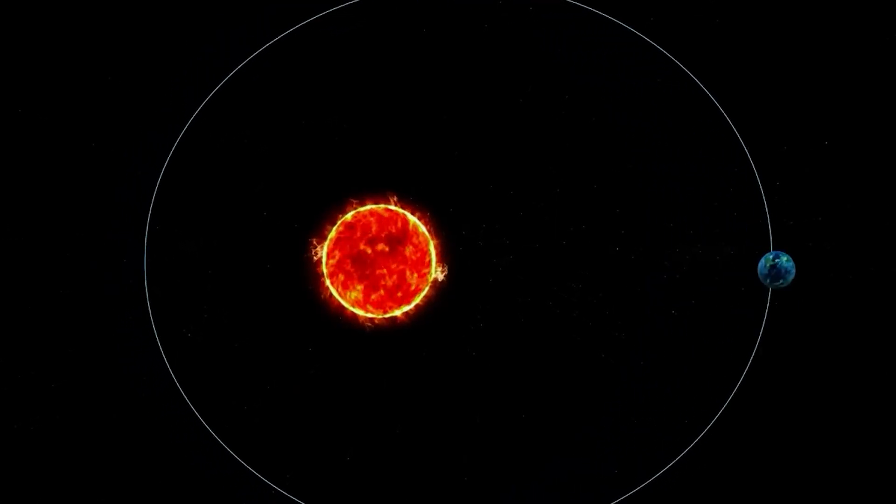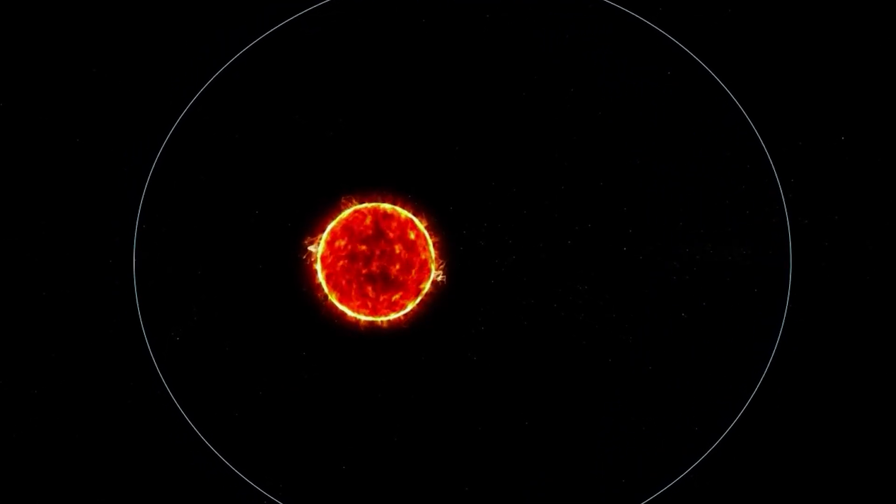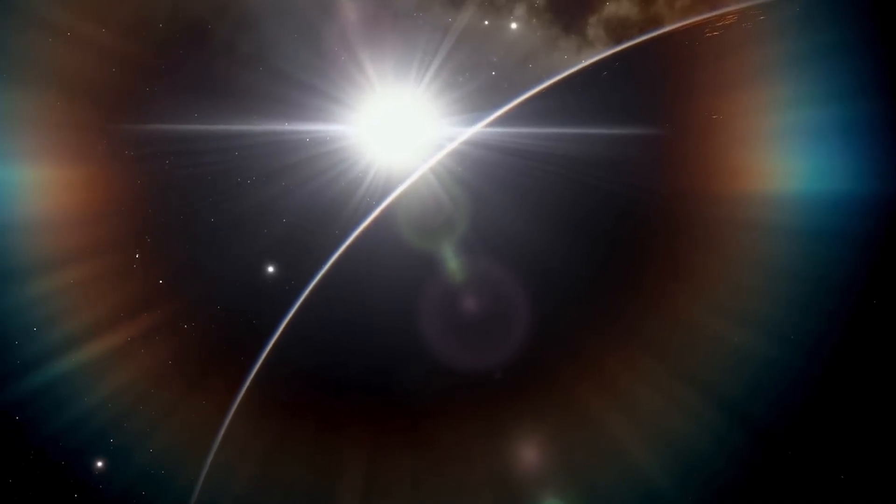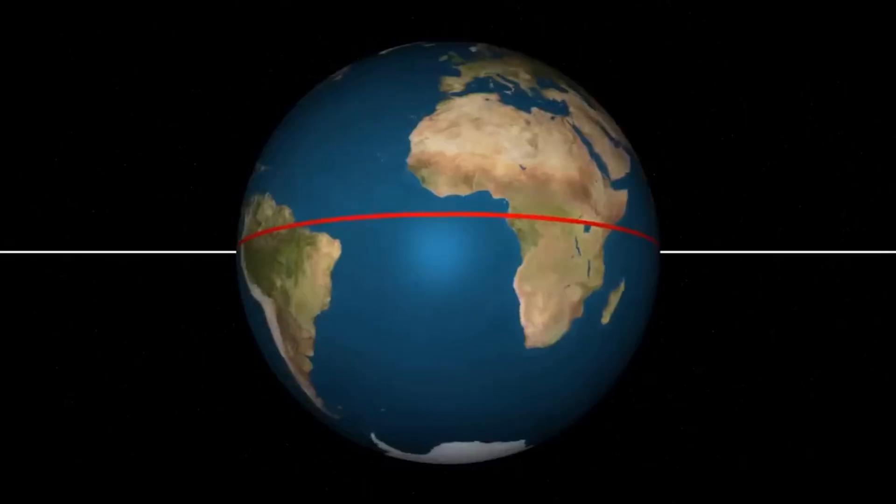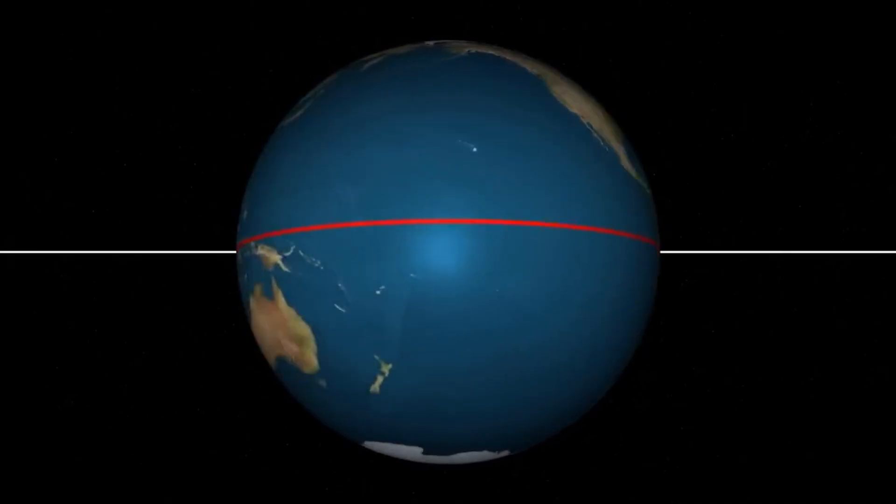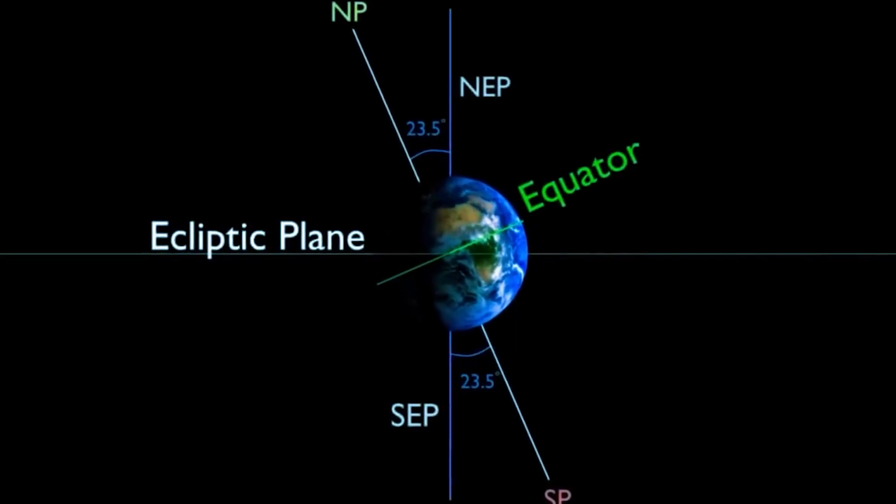But the Earth's dance through space isn't limited to its annual path. Our planet rotates on an axis that is tilted relative to its orbital plane. And this tilt isn't fixed. It oscillates between 22 and 24.5 degrees, in cycles that last just over 41,000 years.